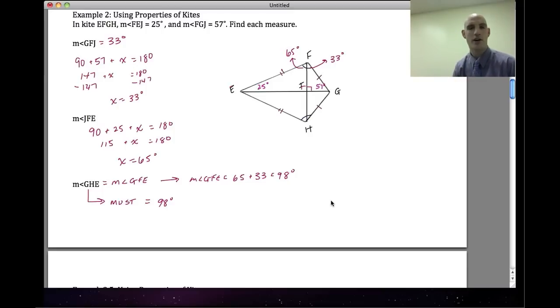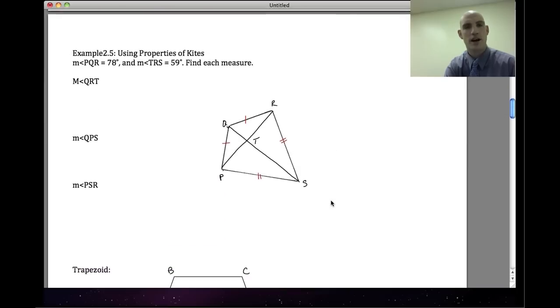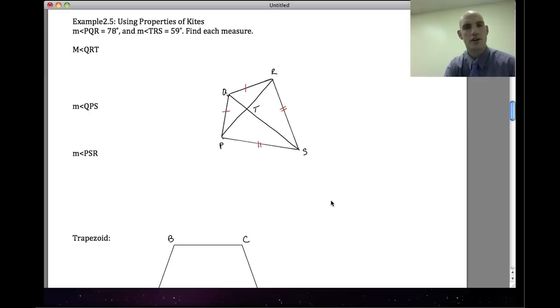That's how I can use the properties of kites to solve for these missing values. The next example is Example 2.5—save that one, try that one on your own, and we'll bring it to class. We're going to talk about it. So I'm going to scroll down and allow you some time to talk about this one on your own and to copy it down. So pause it here, copy this one down.